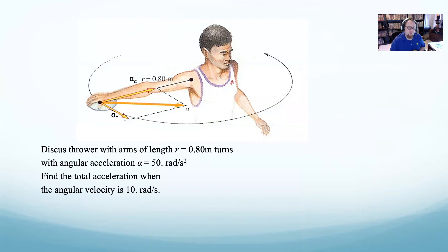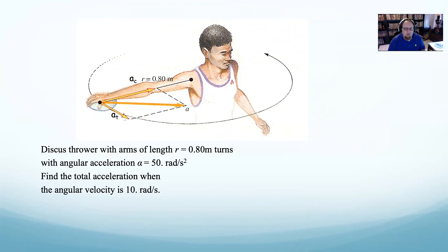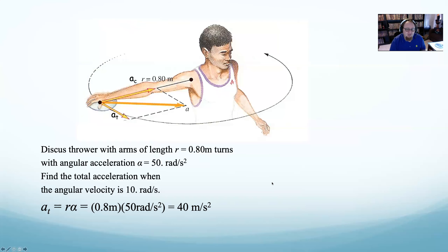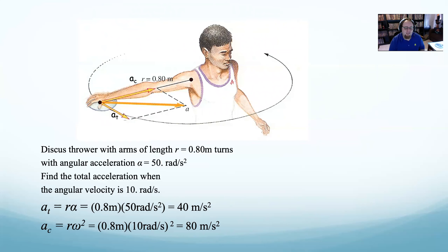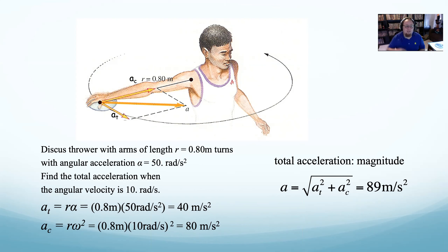This problem isn't written in the best way, but: discus throwers hold the discus in their hand and rotate their arm. Say a discus thrower has an arm length of 0.8 meters and turns with an angular acceleration of 50 radians per second squared. What is the total acceleration at the exact moment their angular velocity is 10 radians per second? There are two parts of acceleration for circular motion: tangential acceleration (α × r = 50 × 0.8) and centripetal acceleration (ω²r). These two are perpendicular, so you add them using the Pythagorean theorem to find the total. That's the general idea.